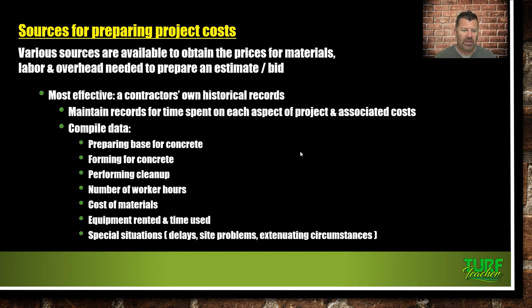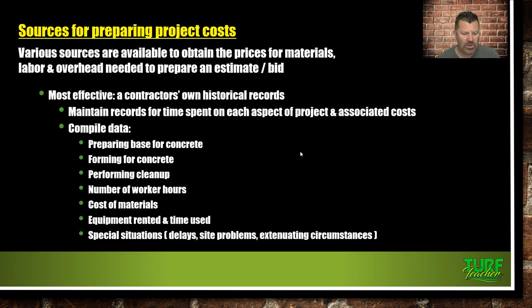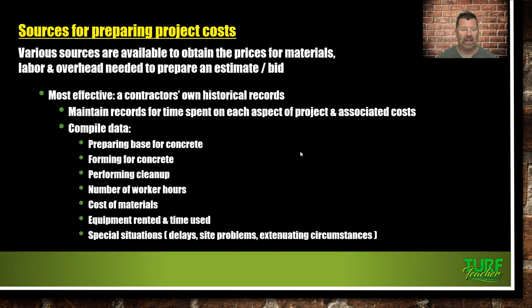Labor and overhead need to be calculated to prepare the estimate. Most effective is the contractor's own historical records — that's why monotonous work makes money. Maintain records for time spent on each aspect of a project, compile data to establish base times for tasks like forming concrete or performing cleanup. Track costs of materials, equipment rented, and time in special situations like delays or site improvements. If you're doing a 30-day job and it rains 5 days, plan for 35 days on the next similar job.